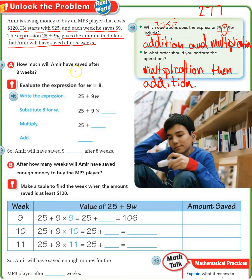How much will Amir have saved after 8 weeks? Let's evaluate. We want to plug in 8 for W. So we have 25 plus 9 times 8. We want to say how much will he have after 8 weeks. So we multiply first — 9 times 8 is 72 — and then we add, which gives us 97. So Amir will have saved $97 after 8 weeks.